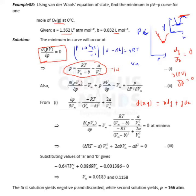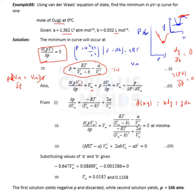So ∂(PV_m)/∂P = P·∂V_m + V_m·∂P, then dividing by ∂P gives: ∂(PV_m)/∂P = V_m + P·(∂V_m/∂P). This can also be written as V_m + P/(∂P/∂V_m). Since we know P in terms of V_m, we can find ∂P/∂V_m. Differentiating: ∂P/∂V_m = −RT/(V_m − b)² + 2a/V_m³.